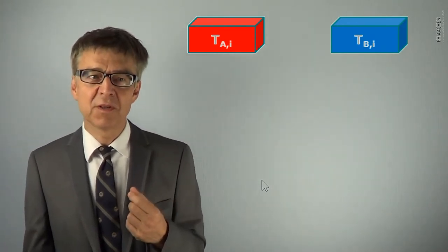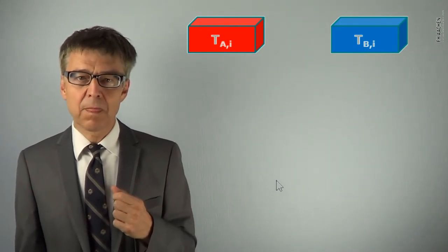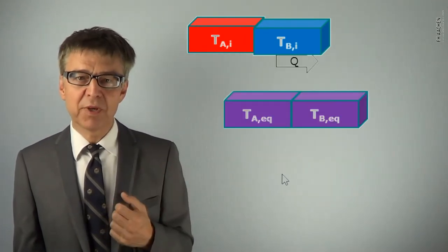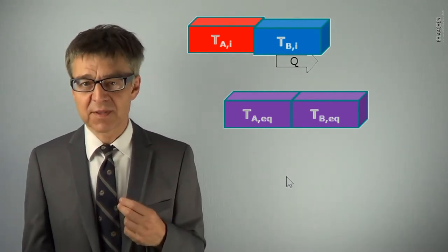If system A at initial high temperature and system B at initial low temperature are connected by a heat-conducting medium, thermal equilibrium can be established. Heat flows from A to B and results in the same final temperature in both systems.